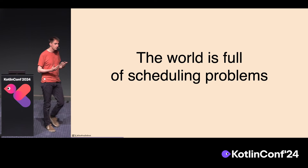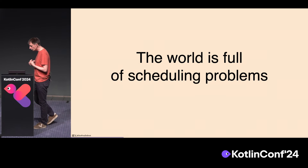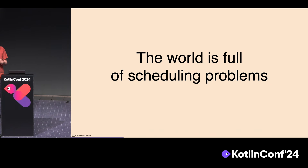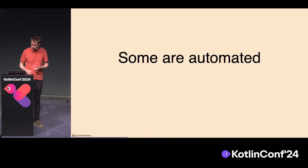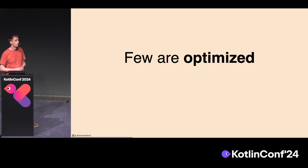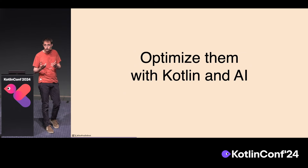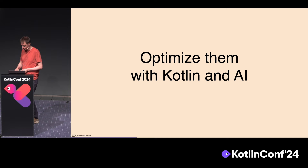You walk into a train station, you'll see dozens of these planning problems. You walk into a hospital, you'll see dozens more. Today, most of these are either scheduled manually or poorly automated — some are automated, but few are optimized. You can optimize them with Kotlin and AI, and I'll show you how to do that with some code later on.